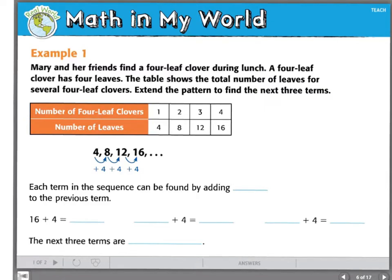Let's begin with an example. Mary and her friends find a four-leaf clover during lunch. A four-leaf clover has four leaves. The table shows the total number of leaves for several four-leaf clovers. Extend the pattern to find the next three terms.